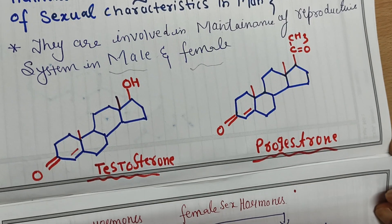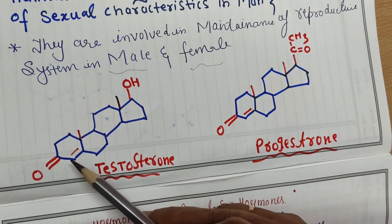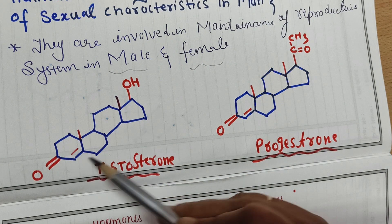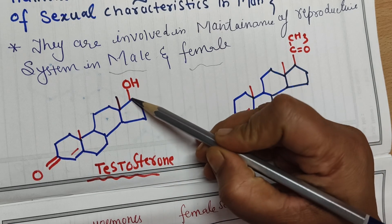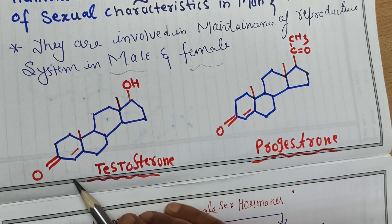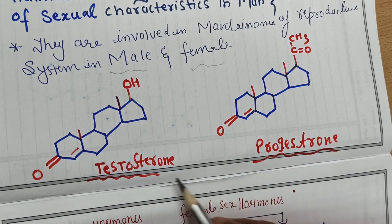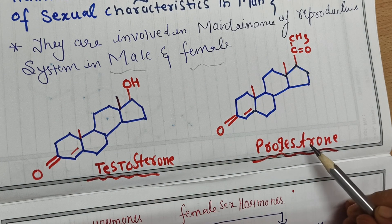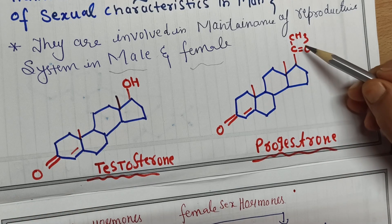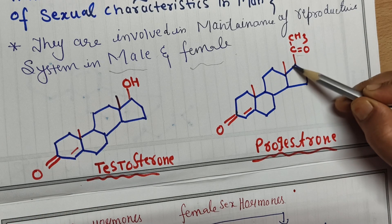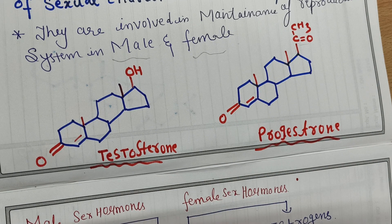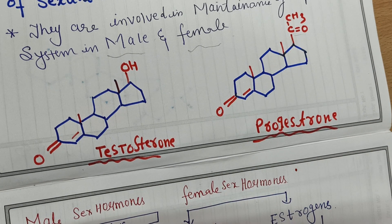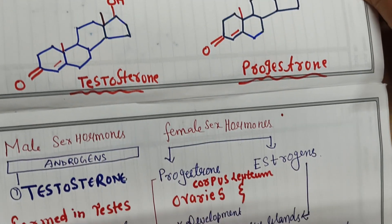Sex hormones are also steroids, so they have Diels' hydrocarbon in their basic structure with an -OH group present. The difference between testosterone and progesterone is that progesterone has a CH3CO (ketone) group at a specific position in its structure. Their structures can be drawn and compared.